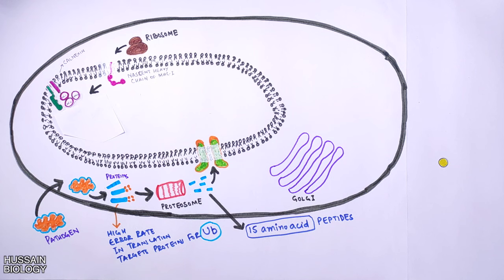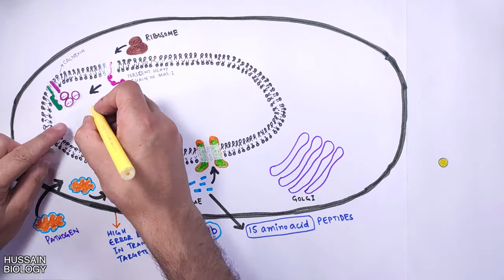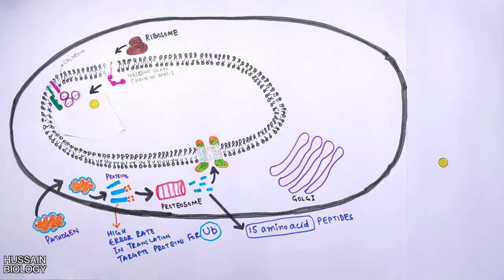The alpha chain we get after folding consists of three domains: the alpha-1 domain, alpha-2 domain, and alpha-3 domain. In the proceeding step, we have the beta-2-microglobulin molecule, which is the light chain.